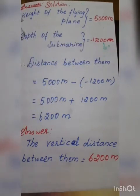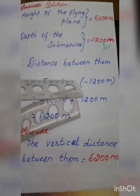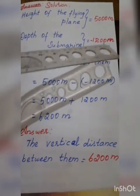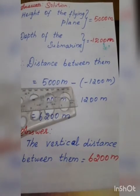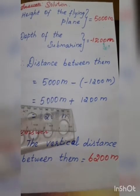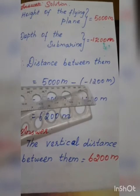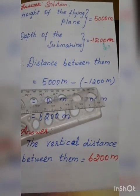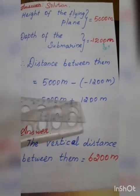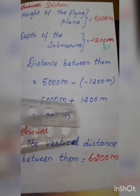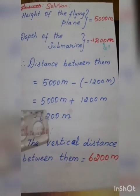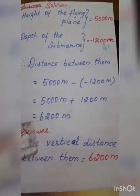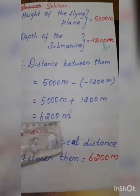The distance between the flying plane and the depth of the submarine: 5000 minus (minus 1200). Subtraction is the opposite of addition, so it changes to addition and the additive inverse of minus 1200 is plus 1200. Add the two numbers: 5000 plus 1200 equals 6200 meters. Both are positive numbers, so add and put the positive sign. The answer is 6200 meters.